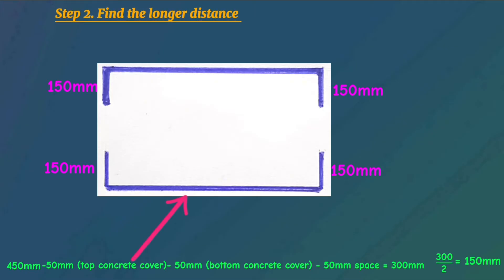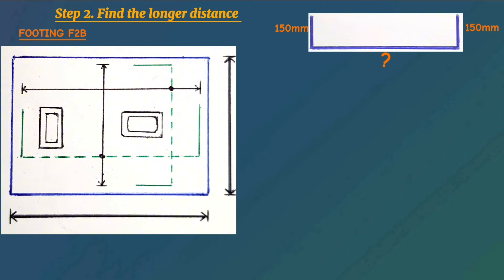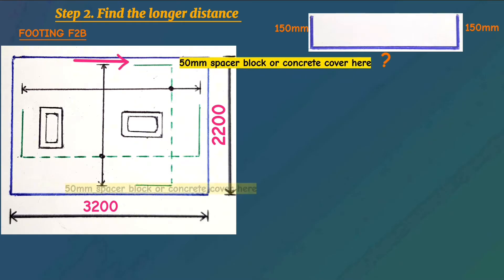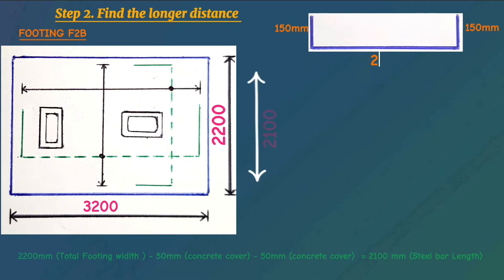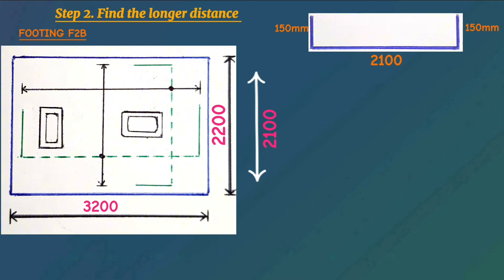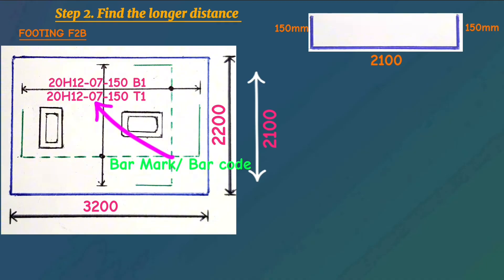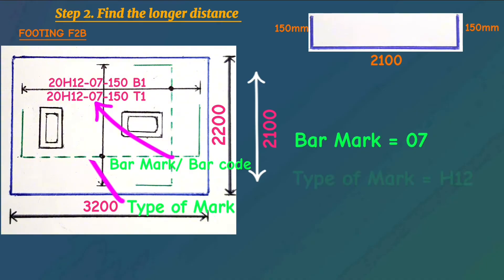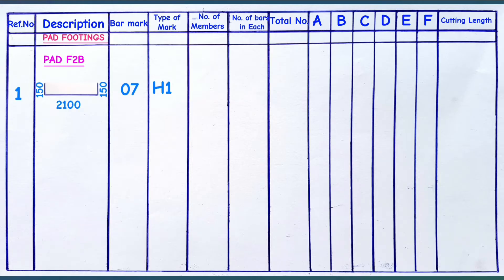This distance is got using the top view of the base or footing. From here to here, the footing is 2.2 meters. When we deduct a 50mm spacer block on each side, the actual distance for the steel bar will be 2.1 meters. The structural drawing details that for base F2B, along its longer side, it has 20H12, bar mark or barcode 7, with 150mm spacing for bottom and top. The bar mark is 7 and the type of mark is H12.